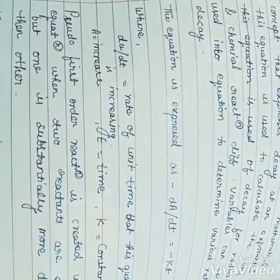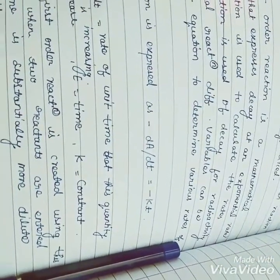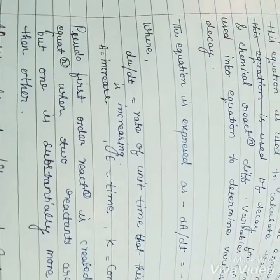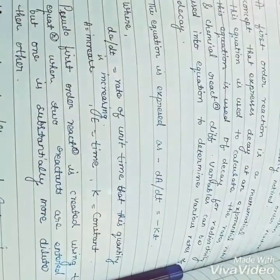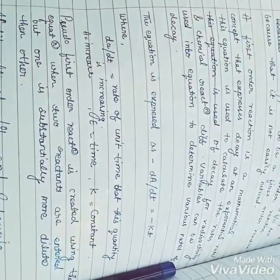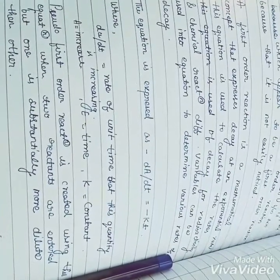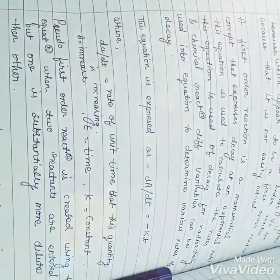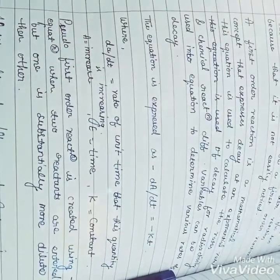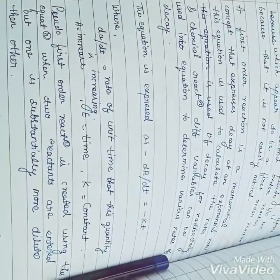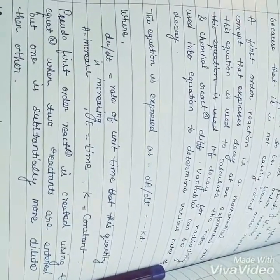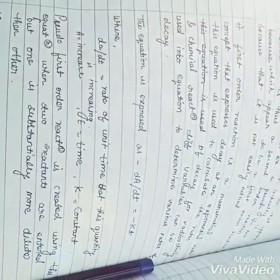A pseudo first order reaction is created using this equation when two reactants are entered but one is substantially more dilute than the other. Dilute means more liquid-like, or more diluted. So we can use this equation when there are two reactants and one reactant is more dilute — this is the pseudo order reaction.